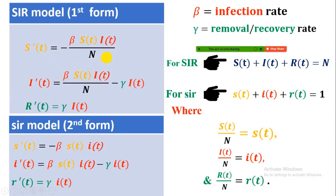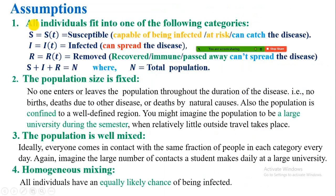Now we will discuss how to derive each of these equations. The assumptions for the SIR model are four. The first assumption is that all individuals fit into one of the following three categories.